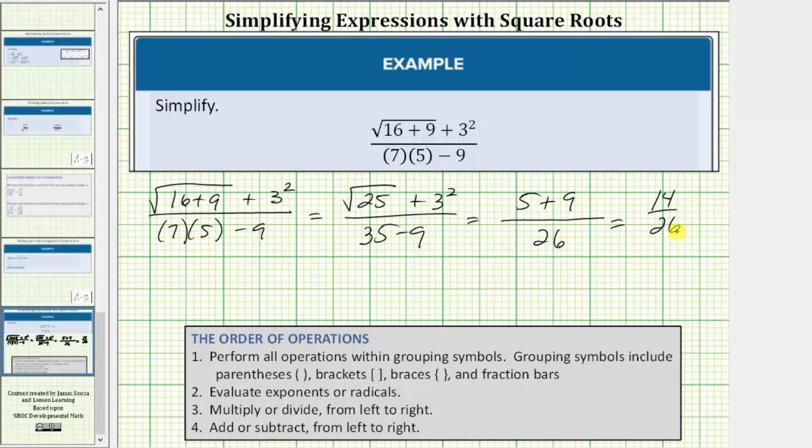But this fraction does simplify because fourteen and twenty-six share a common factor of two. To simplify, we divide the numerator and denominator by two. Fourteen divided by two is equal to seven. Twenty-six divided by two is equal to thirteen.